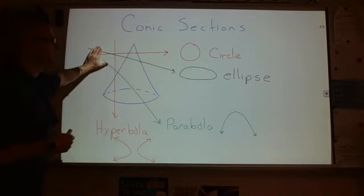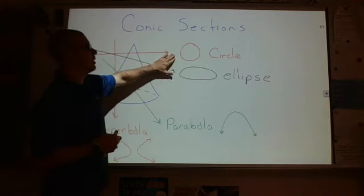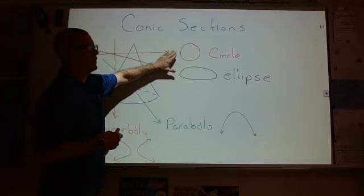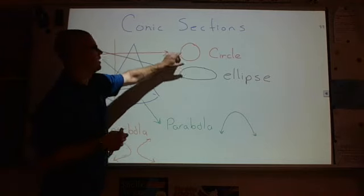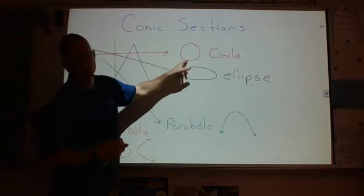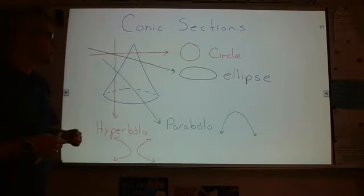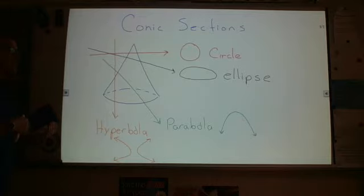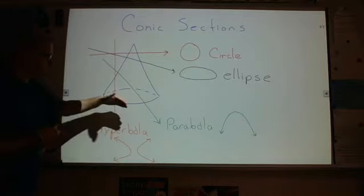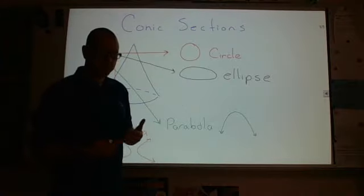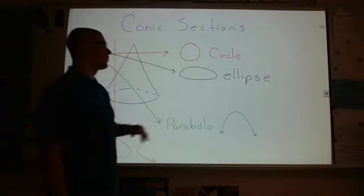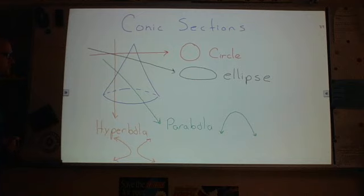We're going to use the circle as our jumping off point, our initial conic section, for a couple of reasons. One, it's very simple — not a lot going on in a circle. And two, the construction of the parent equation, which is what we're going to see for all of these, is also very simple and easy to explain. So that's what we're going to do — start with the circle right now.